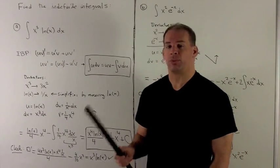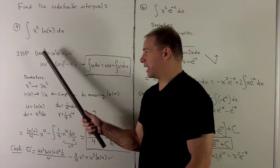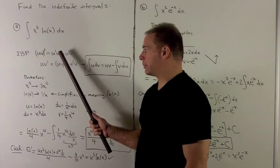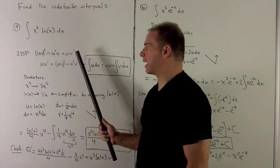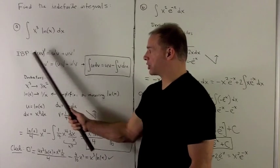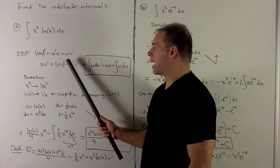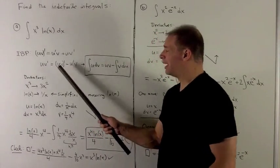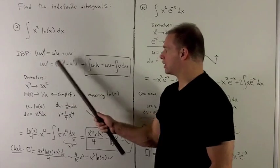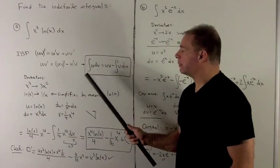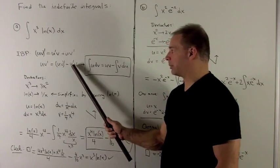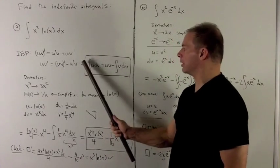Let's start by re-deriving that. I take u times v and take its derivative. The product rule gives u prime times v plus u times v prime. Pushing the u prime v to the other side, we have u times v prime equals uv prime minus u prime v. Taking the integral of both sides gives us the integral of u dv equals uv minus the integral of v du.